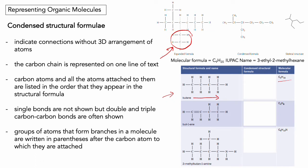Let's look at butane as an example. Starting from the left, we have a carbon with three hydrogens, so we write CH3. We then have one carbon with two hydrogens: CH2, then another CH2, and finally a carbon with three hydrogens: CH3. So the condensed structural formula for butane is CH3CH2CH2CH3. Now for but-1-ene — don't worry about the fancy naming yet, that's coming when we look at alkenes and alkynes.